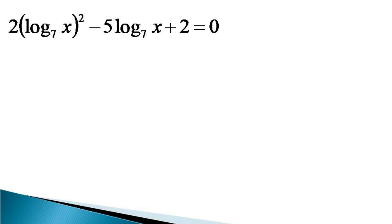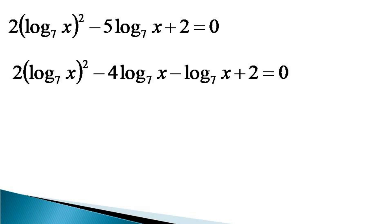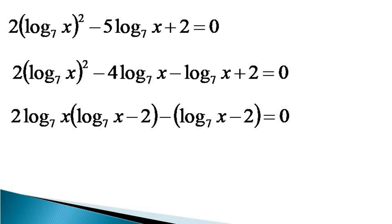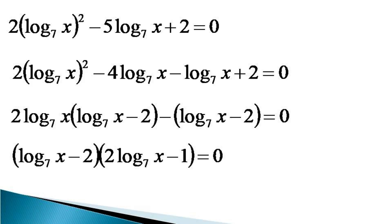This equation is a quadratic equation in log x to the base 7. To solve it, we use the factorization method. The left hand side is expressed as 2(log x to the base 7)² minus 4 log x to the base 7 minus log x to the base 7 plus 2 equals 0. Taking 2 log x to the base 7 common from the first two terms and minus 1 from the last two terms, then taking log x to the base 7 minus 2 common, we get (log x to the base 7 minus 2)(2 log x to the base 7 minus 1) equals 0.